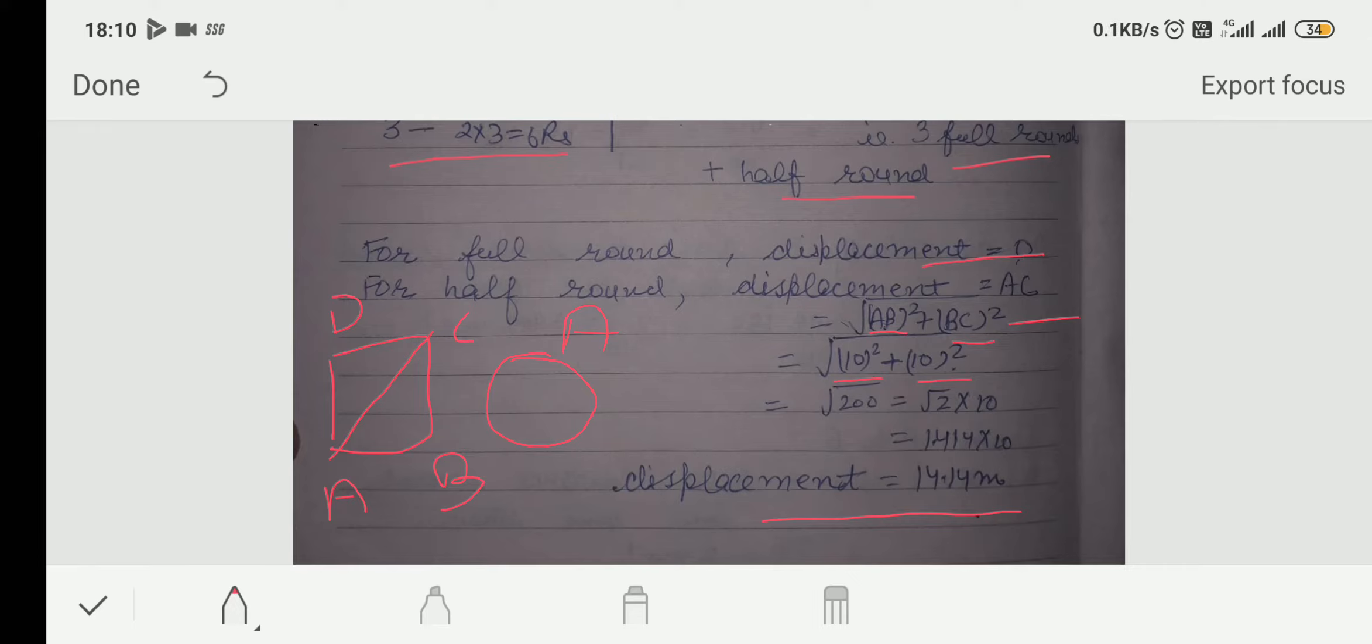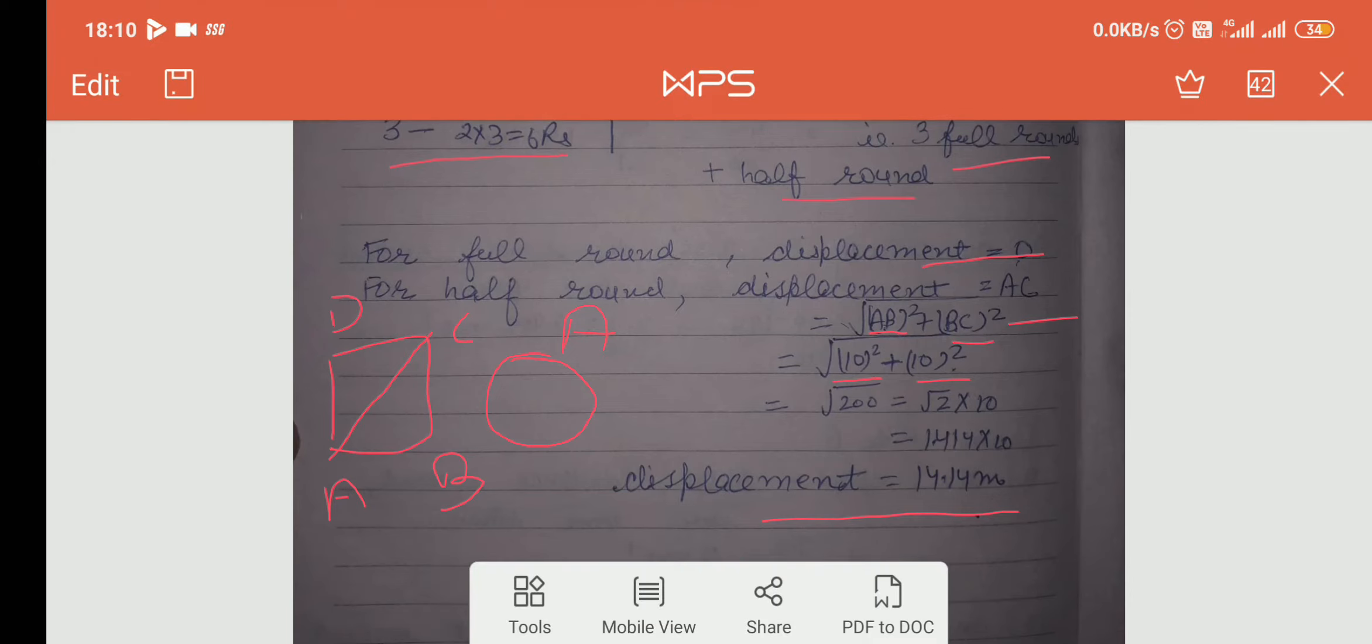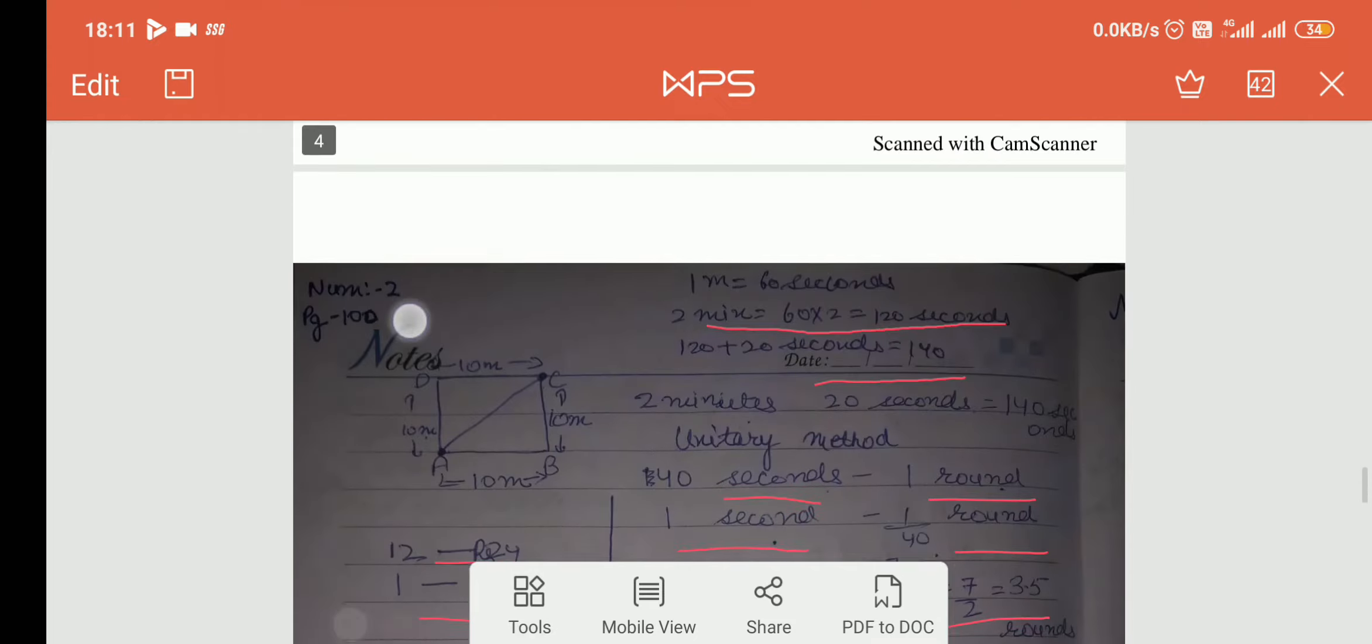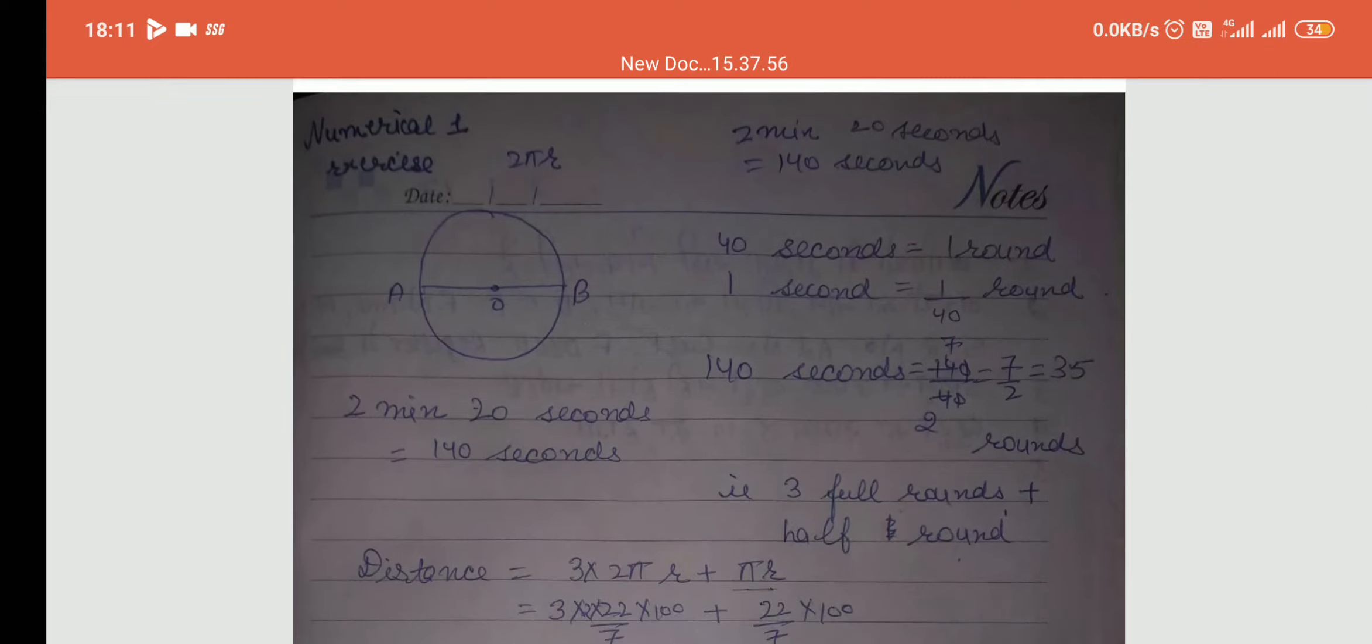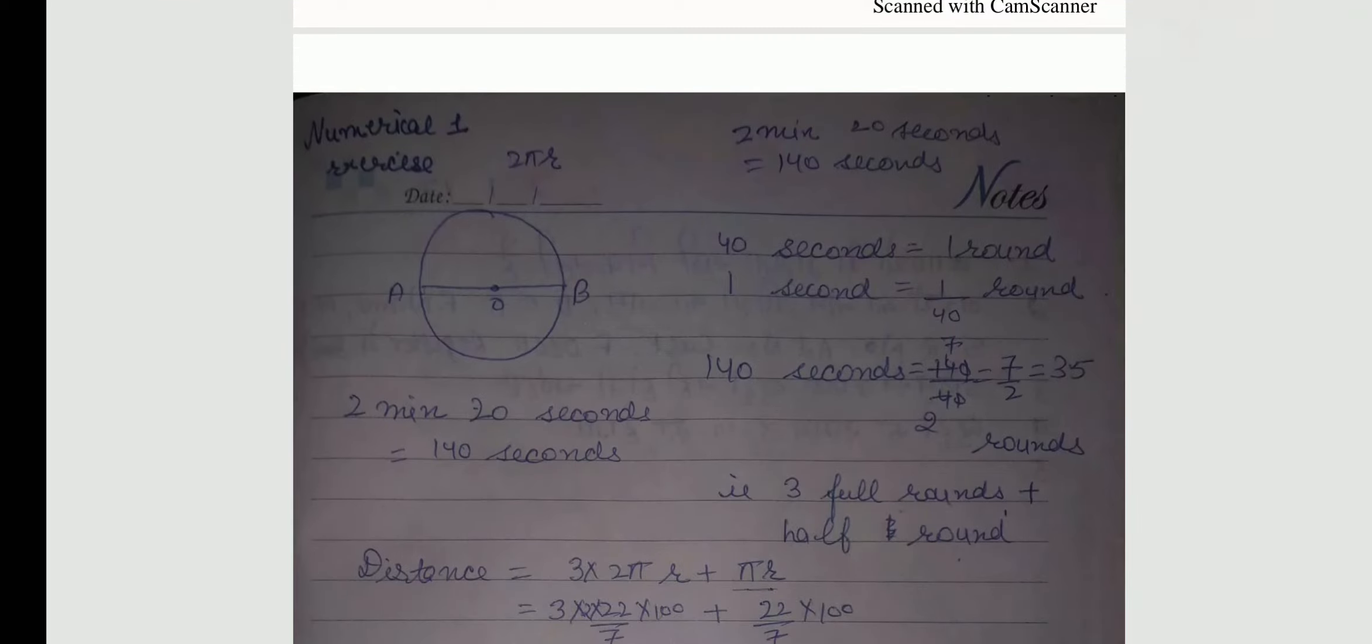Now, I will discuss back exercise numerical with you which is also related to distance and displacement. The page number is 112. An athlete completes one round of circular track of diameter 200 meter in 40 seconds. What will be the distance covered and the displacement at the end of 2 minutes 20 seconds?